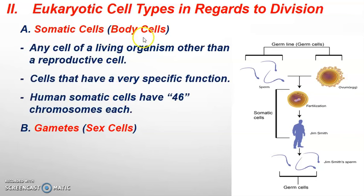Somatic cells are also called body cells. These are any type of cell in your body that's not sperm or egg. So even the cells in your testicles that make sperm are still considered body cells. The cells in your ovaries that make eggs are still considered somatic cells — anything that's not a reproductive cell itself.